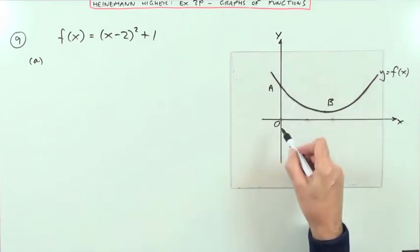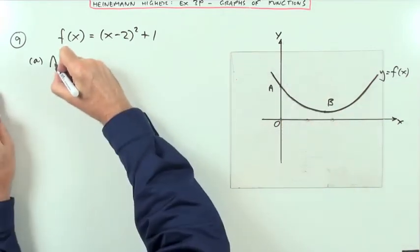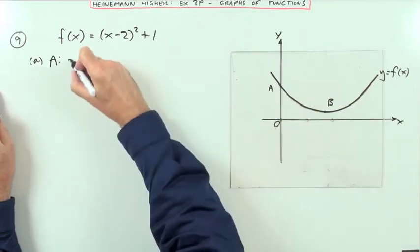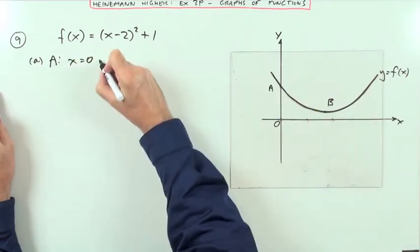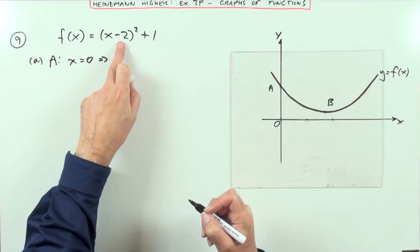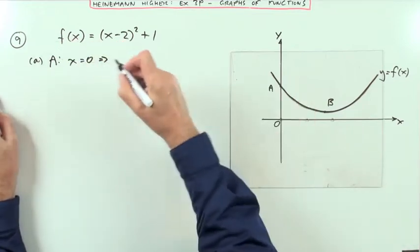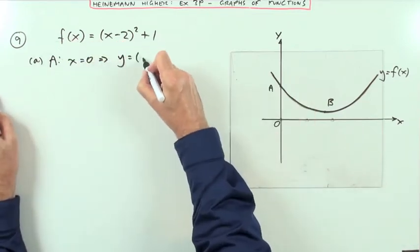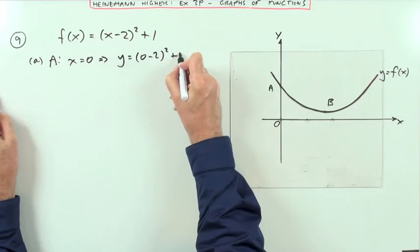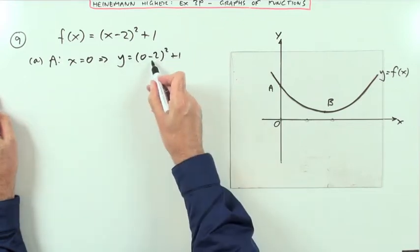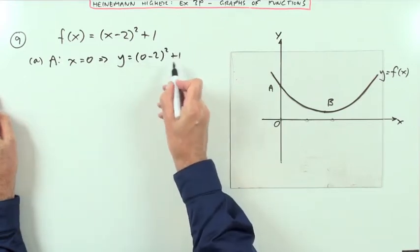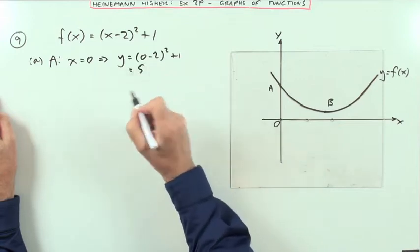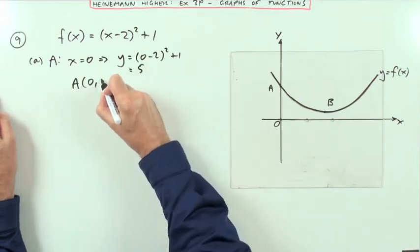Well, A's going to be easy because A's on the y-axis. On the y-axis, you know that x equals 0. And if x equals 0, then putting 0 into the formula will give you the y-coordinate. So the y-coordinate will be 0 take away 2 squared plus 1. That's negative 2 squared is 4, plus 1 is 5, which means A is the point (0, 5).